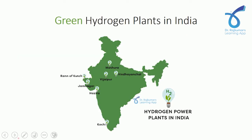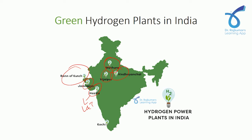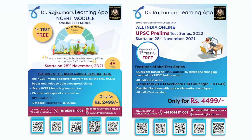Many green hydrogen plants are now coming up in India. These include plants in Rann of Kutch, and investments by private players like Reliance in Jamnagar and Hazira, L&T in Hazira, Indian Oil Corporation (IOC) in their Mathura refinery complex, NTPC in Vindhyachal and Vijaipur, and the Adani Group also investing in green hydrogen plants. Green hydrogen is the future. For more such updates, please download our app and subscribe to our YouTube channel.